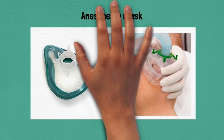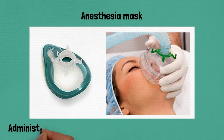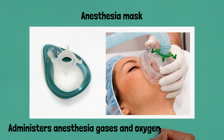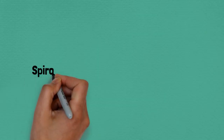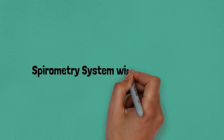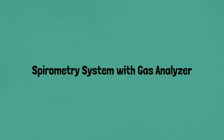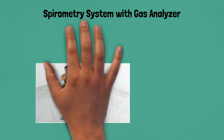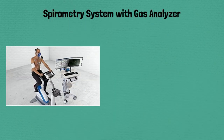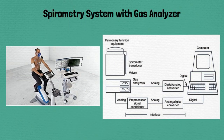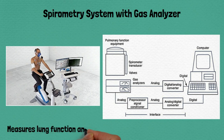Seventy-six: anesthesia mask, administers anesthesia gases and oxygen during induction. Seventy-seven: spirometry system with gas analyzer, measures lung function and gas exchange to assess respiratory health.